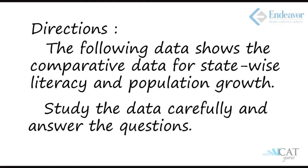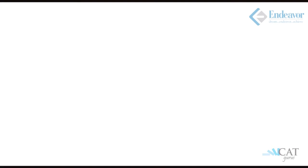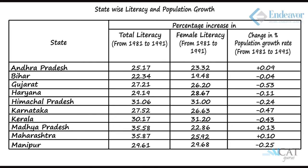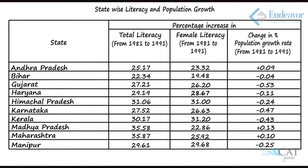The following data shows the comparative data for state-wise literacy and population growth. The data covers literacy as well as population growth. There are close to 10 states listed on the left side. On the top there are three columns: percentage increase in total literacy from 1981 to 1991, percentage increase in female literacy from 1981 to 1991, and percentage increase in population growth from 1981 to 1991. It is very important to understand this data clearly.